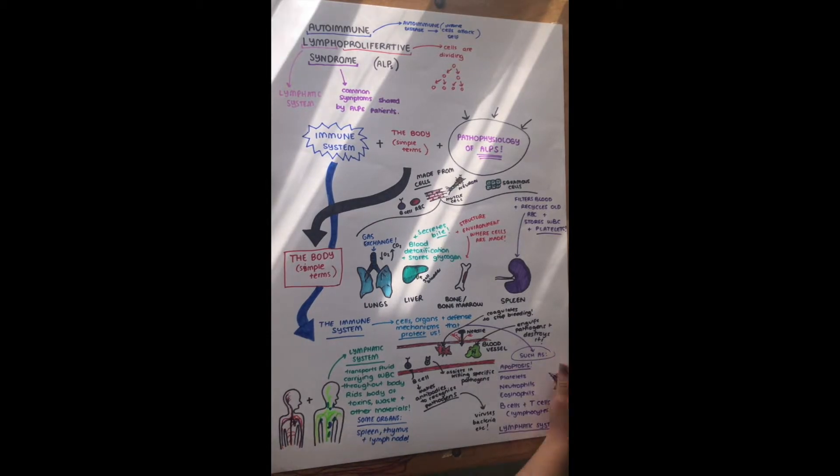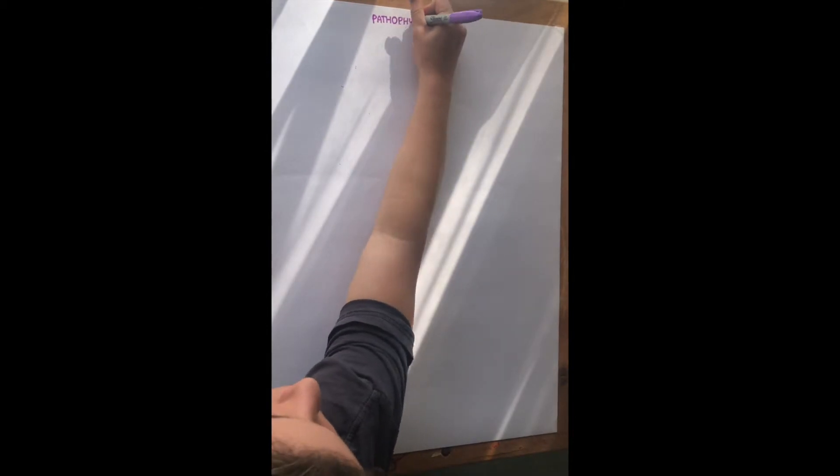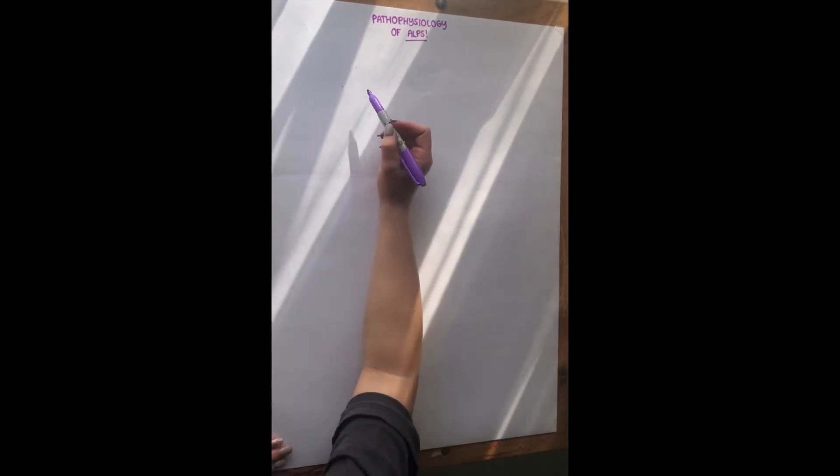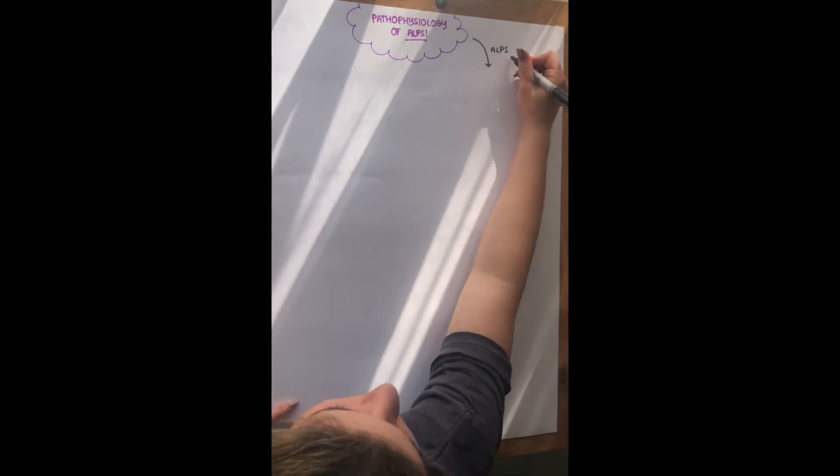So the immune system is mainly composed of those white blood cells, which was the neutrophils, and the B cells and T cells and all of that stuff. So now I'm going to go over the pathophysiology of ALPS, because we have the basic understanding of white blood cells, their function of protecting our body, cells in general, of how they make up organs, and all of that stuff in the lymphatic system.